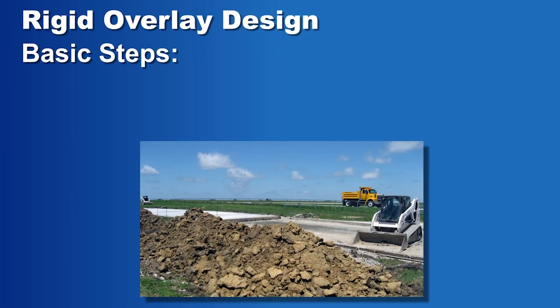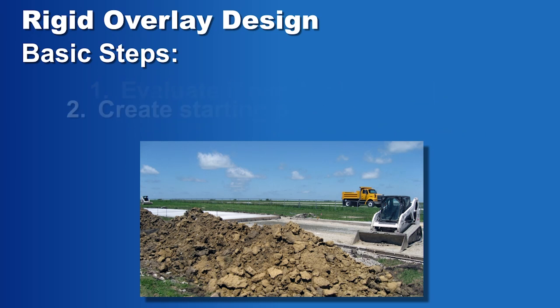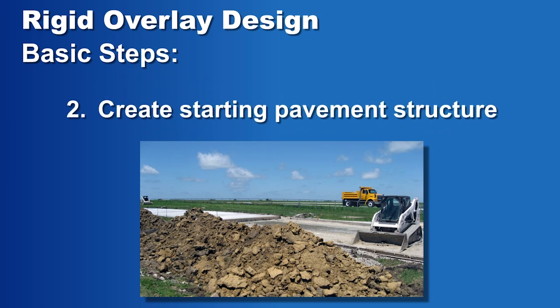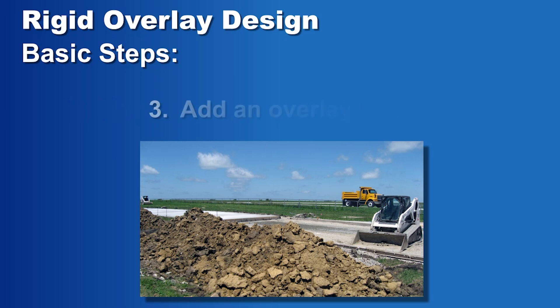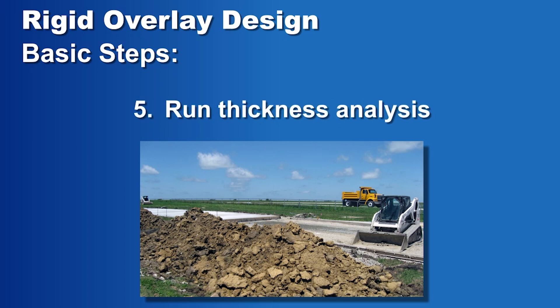Regardless of the starting pavement surface type, all FARFIELD overlay designs involve the same basic steps: 1. Use field and laboratory testing to determine if an overlay is an option. 2. Create a starting pavement structure using a copy of an existing structure when possible. 3. Add an overlay layer — FARFIELD will automatically adjust to the correct analysis type based upon the surface layer. 4. Create or modify a traffic pattern. 5. Run the thickness analysis.